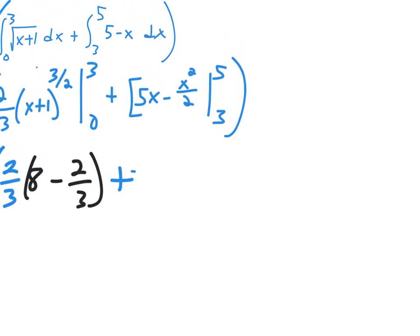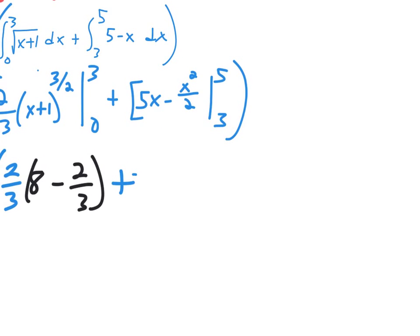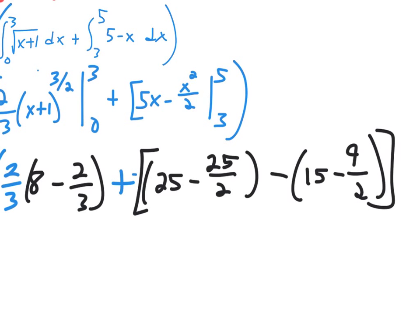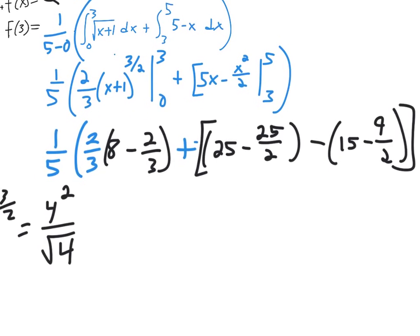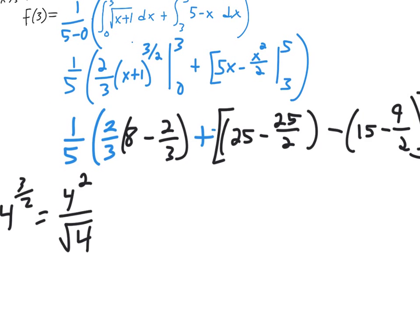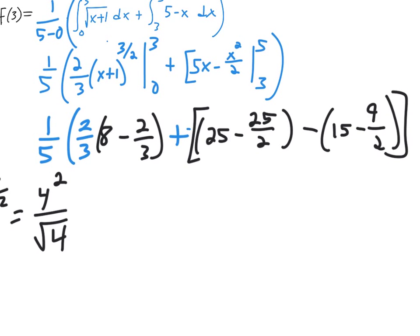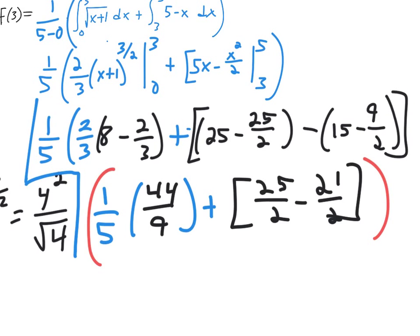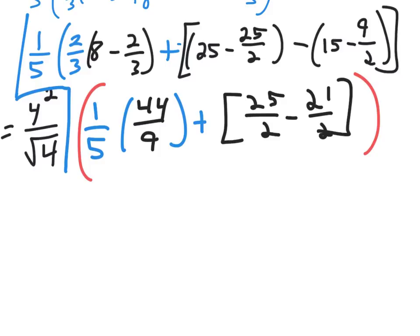And then over here, this one's pretty quick. You just got to plug in 5 and then subtract what happens when you plug in 3. So when you plug in 5 to this guy, it's pretty yucky. You get a bunch of fractions. So I guess cleaning up these fractions, I've simplified it to be this in red. And so continuing.